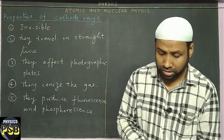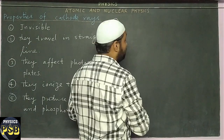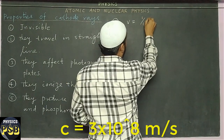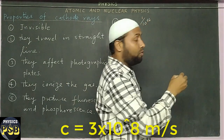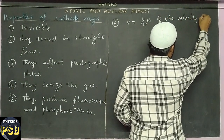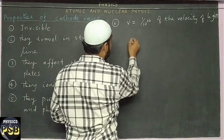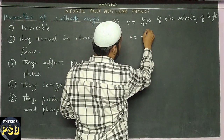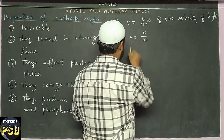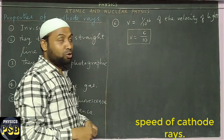Cathode rays travel with one tenth of the velocity of light. The velocity of cathode rays is one tenth of the velocity of light. In equation form this can be written as v = c/10, where c is the velocity of light.